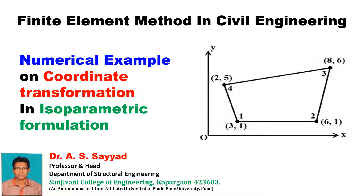In the last class, we solved one numerical example on coordinate transformation in isoparametric formulation, where we discussed: if natural coordinates of any point of the quadrilateral are given, how to find out its Cartesian coordinates. Today in this class, we will solve one numerical example where we discuss: if Cartesian coordinates of any point are given, how to find out its natural coordinates. We will see this with the help of a numerical example of a quadrilateral.